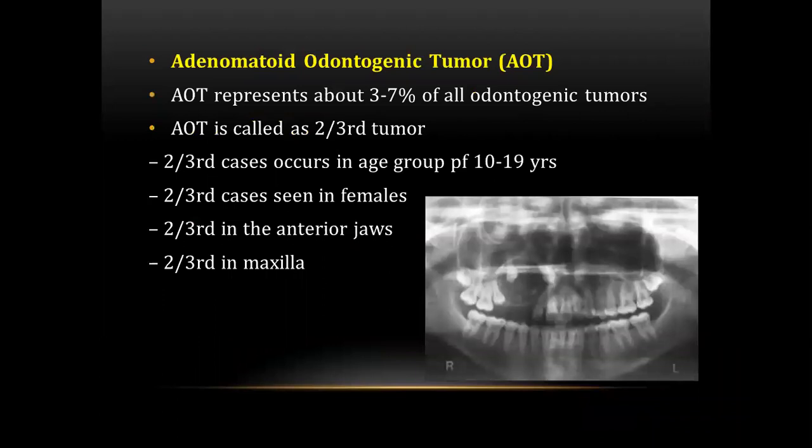The next question was about adenomatoid odontogenic tumor (AOT). AOT represents about 3 to 7% of all odontogenic tumors and is also called the two-third tumor. This is because two-thirds of cases occur in the age group of 10 to 19 years, two-thirds are seen in females, two-thirds occur in the anterior jaws, and two-thirds of cases are seen in the maxilla.